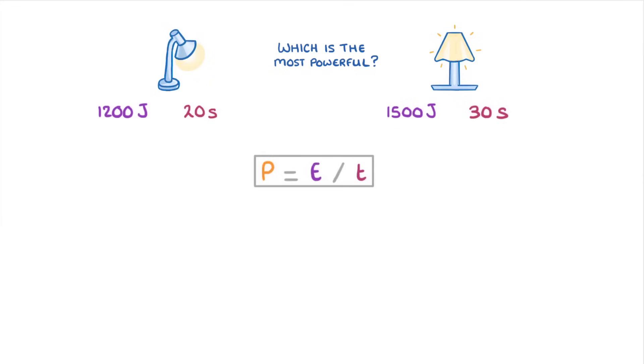For the left lamp, we'd do 1200 joules divided by 20 seconds to give 60 watts as the power. And for the right lamp, we'd divide 1500 joules by 30 seconds to give 50 watts. So we can tell that the left lamp is more powerful. If you look on your lamp at home, there may well be a label telling you its power.